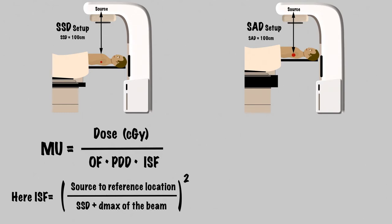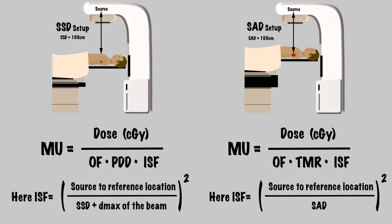For an SAD setup, dose goes in the numerator and modifiers go in the denominator. In this case, if our reference conditions were for SAD setup at 100 centimeters, you can see that inverse square factor would equal 1.